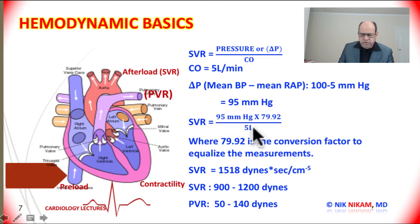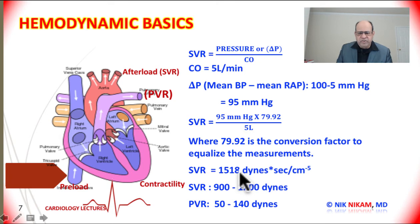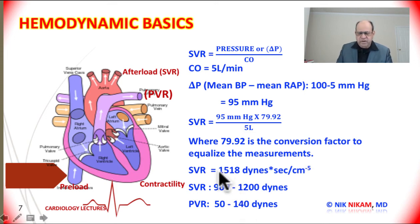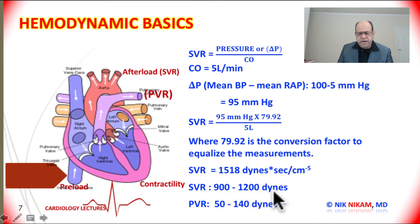By plugging in these numbers we get a systemic vascular resistance of 1518. Systemic vascular resistance is expressed in dynes × seconds per centimeter to the minus fifth power, or simply 1518 dynes. The normal systemic vascular resistance is between 900 to 1200 dynes, whereas the pulmonary vascular resistance is between 50 and 140 dynes.